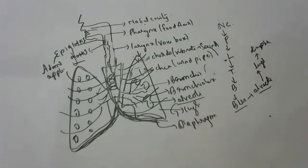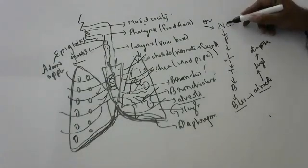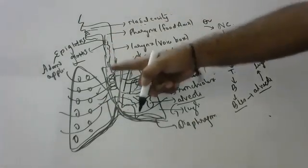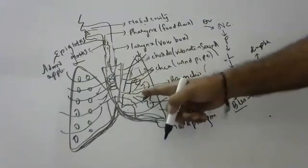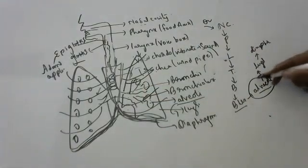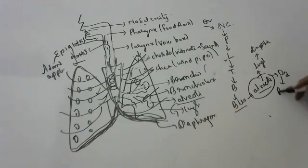When we breathe in oxygen, it comes to the nasal cavity, from nasal cavity to pharynx, pharynx to larynx, larynx to trachea, trachea to bronchi, bronchi to bronchioles, bronchioles to alveoli. In the alveoli, oxygen enters the blood.